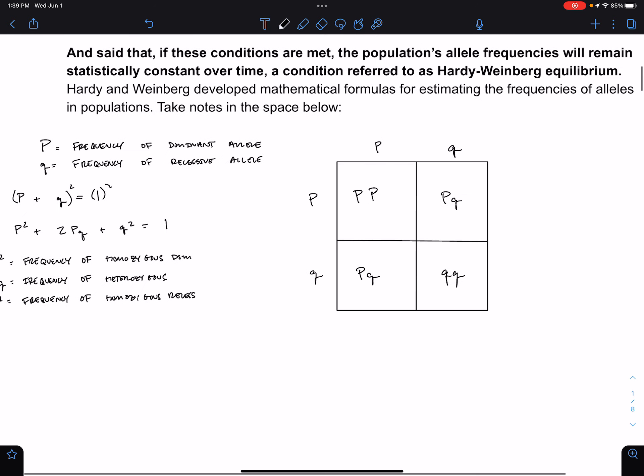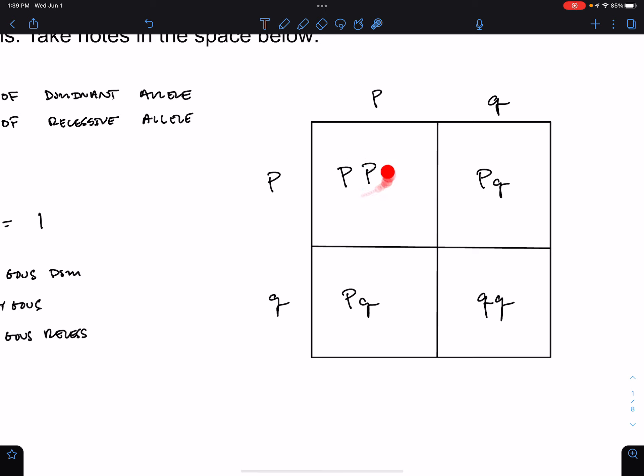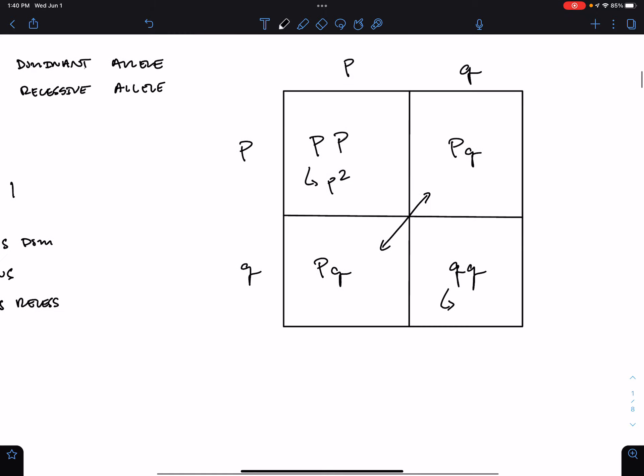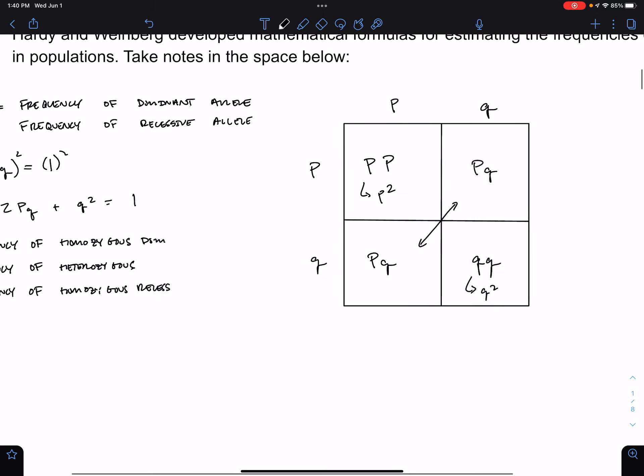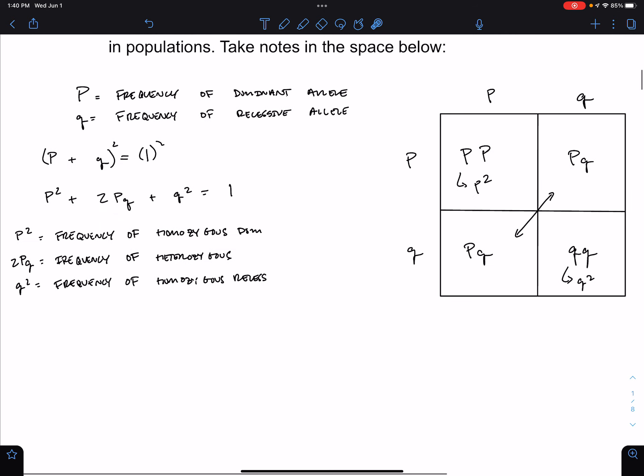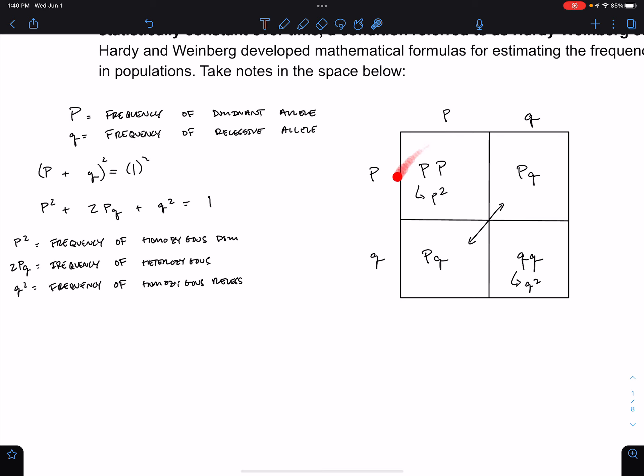You see that this PP is equal to P squared. PQ plus PQ is equal to 2PQ, and Q squared is just equal to this QQ. So basically, this equation is just showing us this compiled Punnett square.